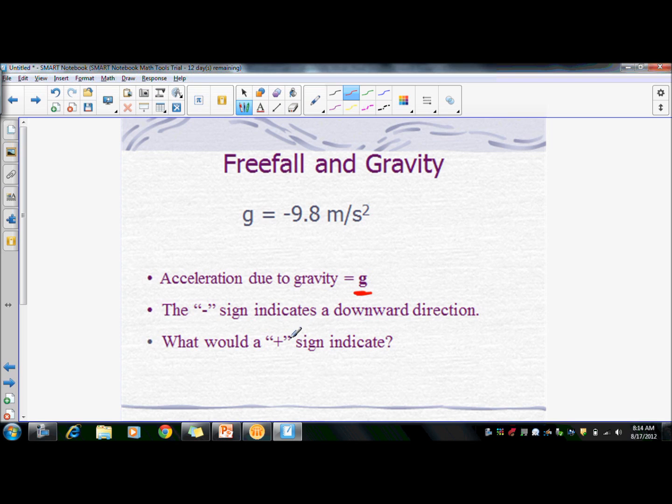The negative sign indicates a downward direction because gravity always pulls things down. So what would a positive sign indicate? It wouldn't indicate that an object is going up. It would indicate that gravity is pulling up. And so since that will never happen,